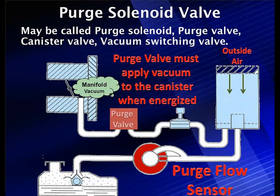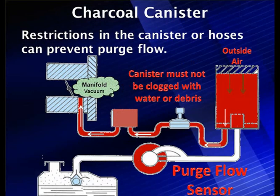The solenoid may be called a purge solenoid, purge valve, canister purge, vacuum switching valve, or vapor pressure monitor. It's simply going to control the vacuum and only apply vacuum to the canister when we want it to and when the computer energizes it. We're going to talk about the conditions when we would do this and talk about the codes we're getting.